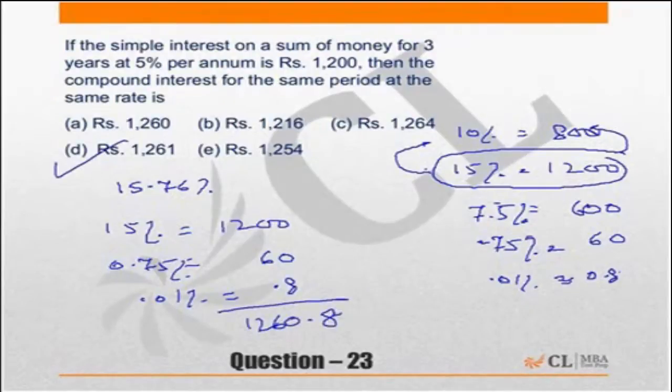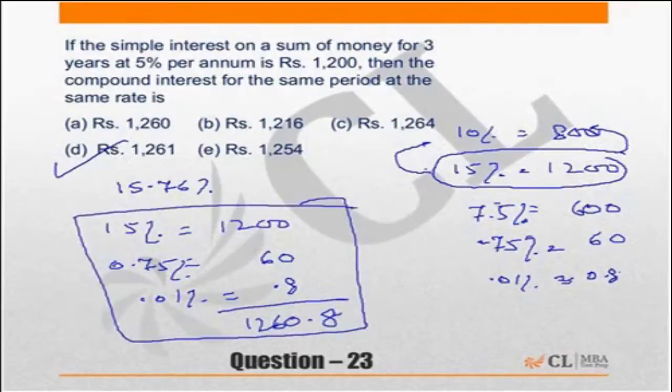In this question, the calculation was the key. Look at the choices: you have 1,260, you have 1,261, you have 1,264, you have 1,254.